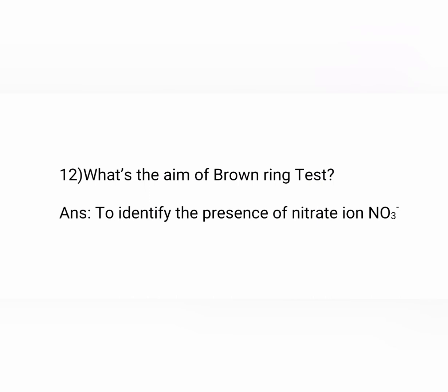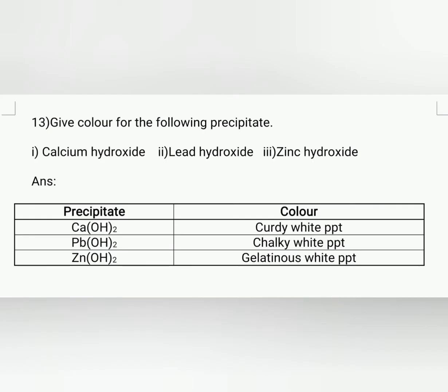What is the aim of the brown ring test? The aim of the brown ring test is to identify the presence of the nitrate ion, i.e., NO3 minus. Color of the following precipitates: calcium hydroxide gives a chalky white precipitate, lead hydroxide gives a curdy white precipitate, and zinc hydroxide gives a gelatinous white precipitate.